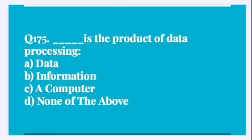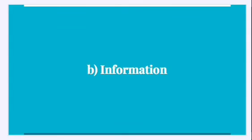Question number 175: Which is the product of data processing? Options are: A, data; B, information; C, a computer; D, none of the above. Correct answer is option B, that is information.